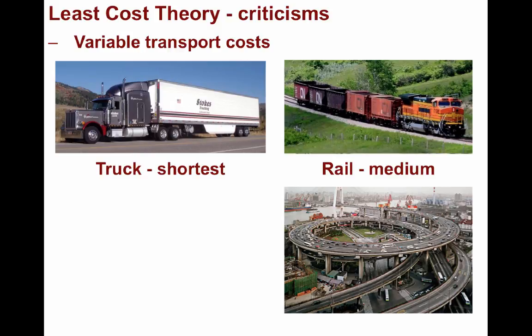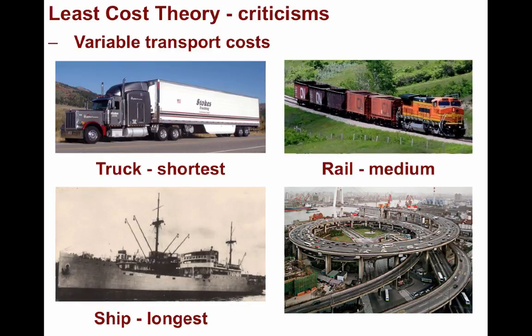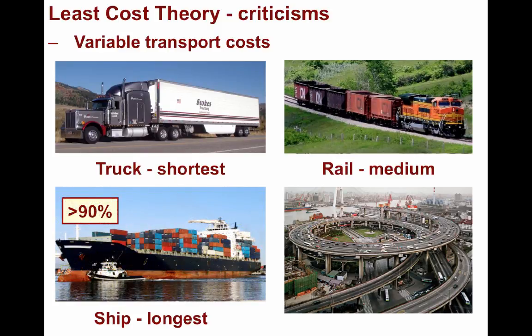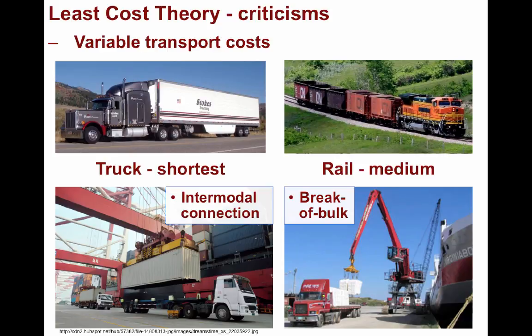The cheapest way to transport goods, especially over far distances, is by ship. Around 90% of all trade is done worldwide through ocean transportation, and containerization has made this possible. This was not utilized back in Weber's day, since containerization wasn't invented until the 1950s and was minimally utilized until the 1970s. Along with modern modes of transportation, there are intermodal connections such as break-of-bulk locations, where goods are moved from one mode of transportation to another. In this image, you see goods being moved from ship to truck. Goods can also be moved from ship to rail, or rail to truck, and so on.